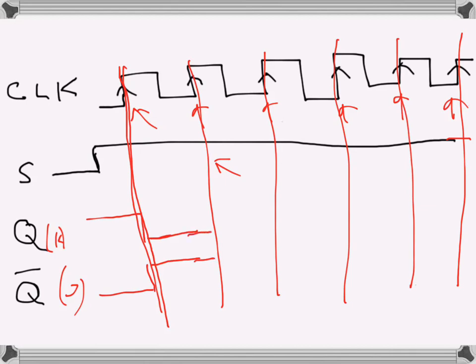Q will become one because J is one, and Q̅ will become zero. I'll use another color, maybe green. So that's one and it goes like that, zero goes like that.